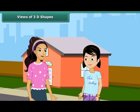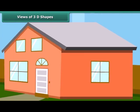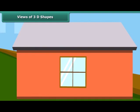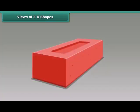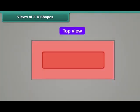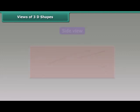Rita, do you know that three-dimensional objects look different from different positions? How? Look at our house. It can have many views. This is the side view of the house. This is the front view and this is the top view. Similarly, this brick can have different views: top view, side view, and front view.